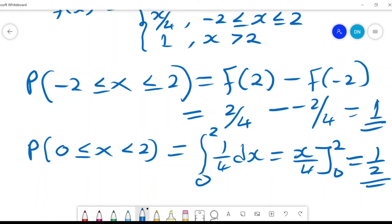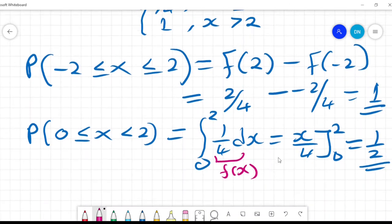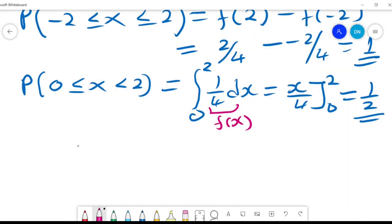I use the f(x). Now I could do the same, but this time I use the cumulative. And how do I go about using the cumulative? I would say it is F(2) minus F(0).